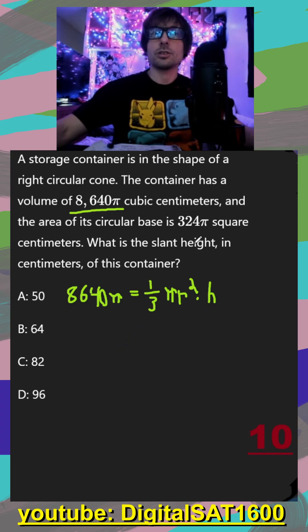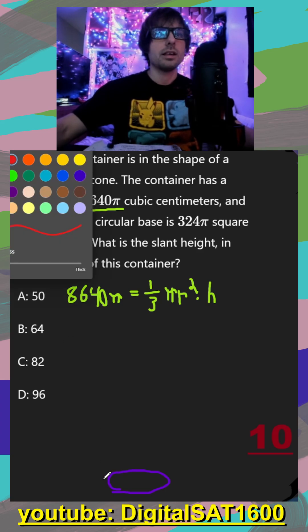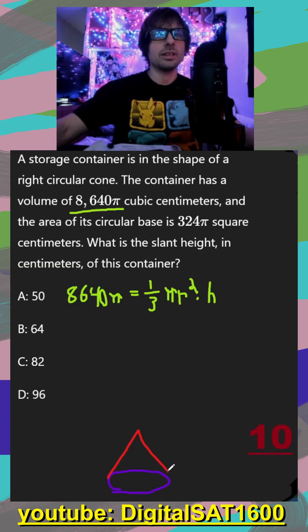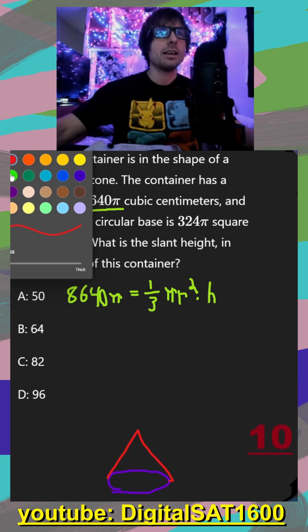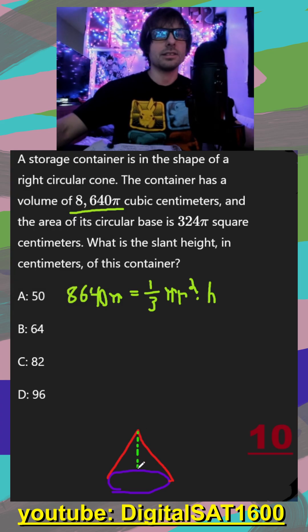Next, they tell us the area of its circular base. So maybe having a little bit of a picture. So here's our circular base. And here would be the cone aspect. And then the height of the cone is going to be from the center of our circular base up to the top.